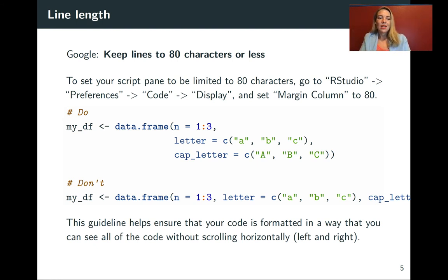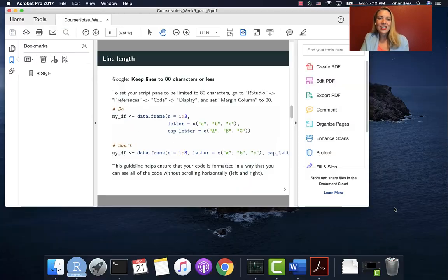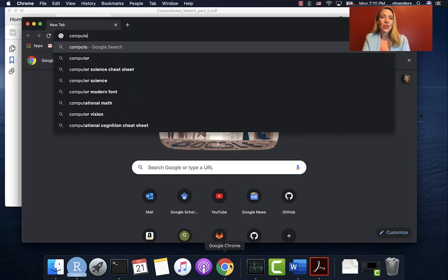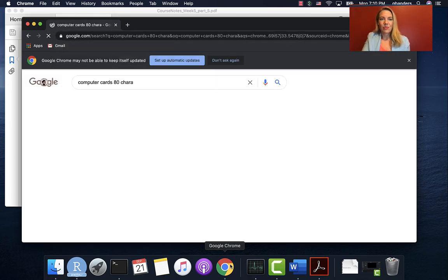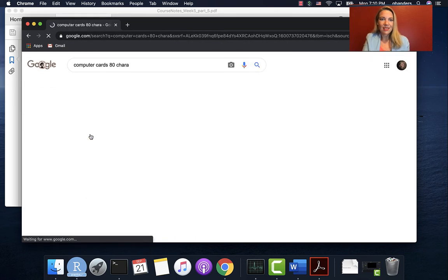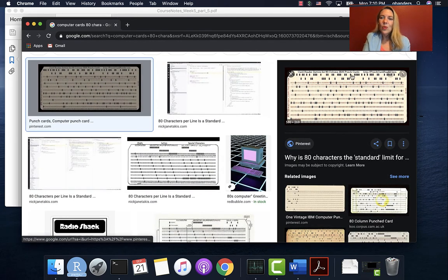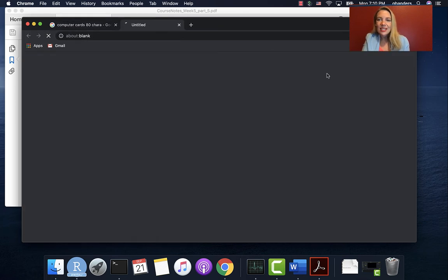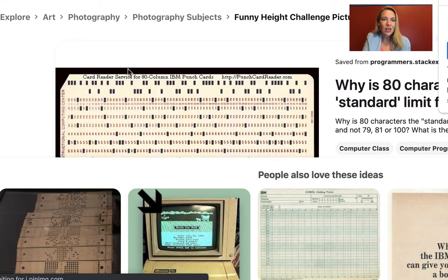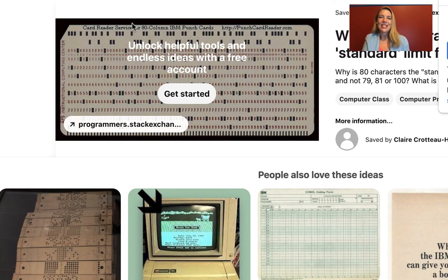So this 80 characters line actually comes from the history of computer science so computer cards used to be 80 characters let's see if we can pull that up. Yeah this should work. So all the coding used to be done by putting the code and the data on these cards that look kind of like this and you can see you can actually see even up at the top of this example these had 80 columns so we've kind of kept that idea of trying to keep things to 80 columns when we code.